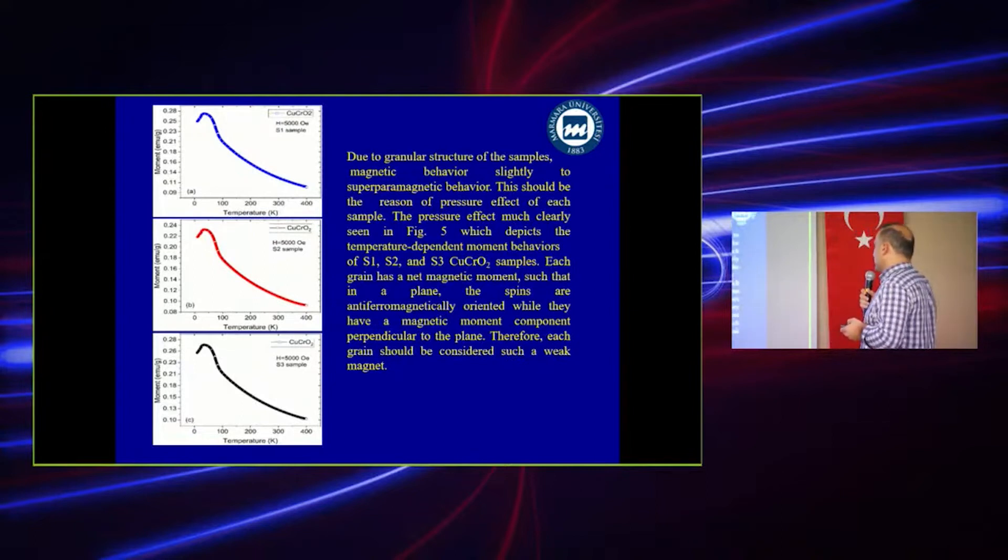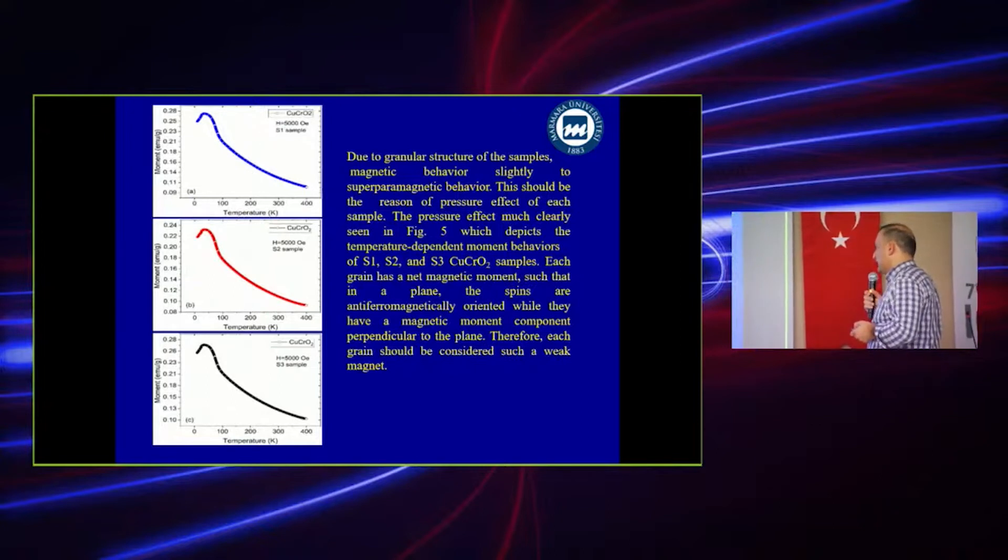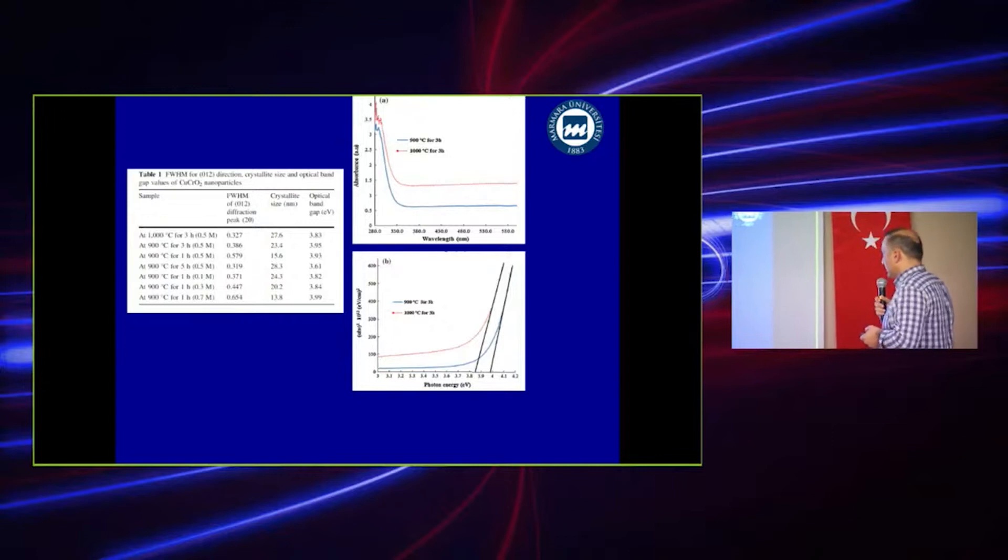Due to the grain structure of the samples, magnetic behavior is slightly superparamagnetic. This should be the reason of the pressure effect of each sample. The pressure effect is much more clearly seen in the figure which depicts the temperature dependent moment behavior. These three are temperature-moment behaviors for the S1, S2, and S3 samples. Each grain has a net magnetic moment such that in a plane the spins are antiferromagnetically oriented while they have a magnetic moment component perpendicular to the plane. Therefore each grain should behave as such a weak magnet.